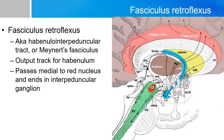Here we have the major output tract of the habenulum, called the fasciculus retroflexus. This structure has other names: the habenulointerpeduncular tract, or Meynert's fasciculus. The habenulointerpeduncular tract simply names the beginning and end of the pathway. The habenular nucleus sends fibers via the fasciculus retroflexus, which passes medial to the red nucleus and ends in the interpeduncular ganglion — hence the name habenulointerpeduncular tract.